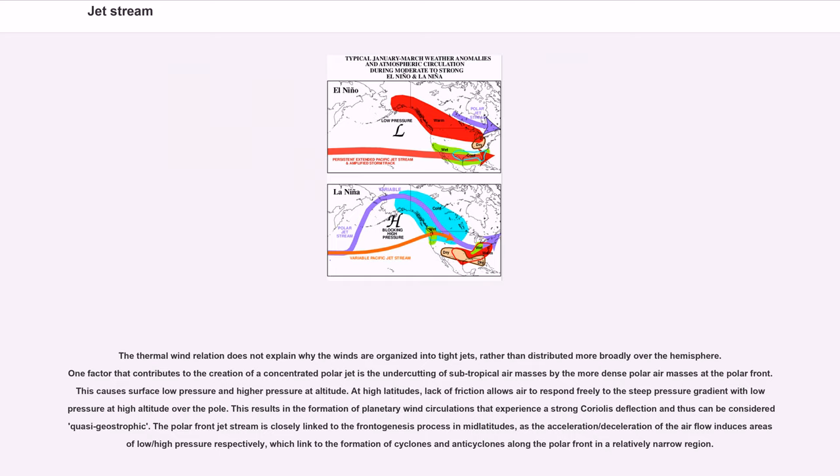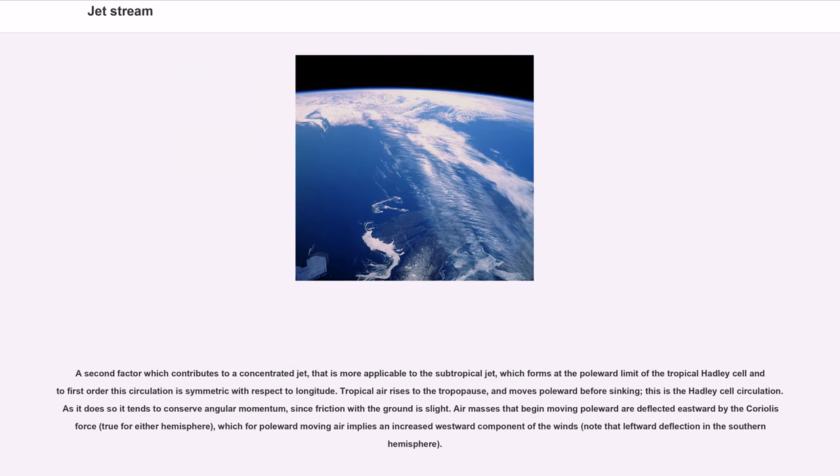The polar front jet stream is closely linked to the frontogenesis process in mid-latitudes, as the acceleration/deceleration of the air flow induces areas of low/high pressure respectively, which link to the formation of cyclones and anti-cyclones along the polar front in a relatively narrow region. A second factor which contributes to a concentrated jet, that is more applicable to the subtropical jet, which forms at the poleward limit of the tropical Hadley cell. Tropical air rises to the tropopause, and moves poleward before sinking, this is the Hadley cell circulation. As it does so it tends to conserve angular momentum. Air masses that begin moving poleward are deflected eastward by the Coriolis force, which for poleward moving air implies an increased westward component of the winds.